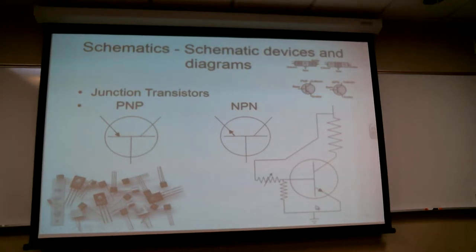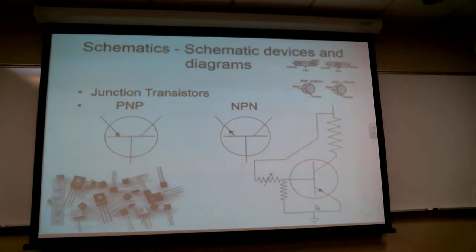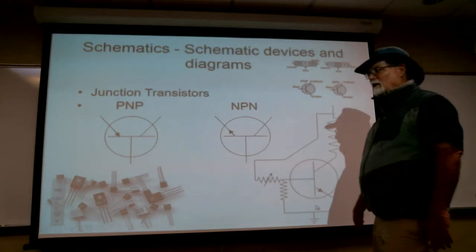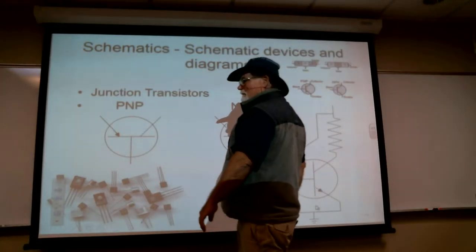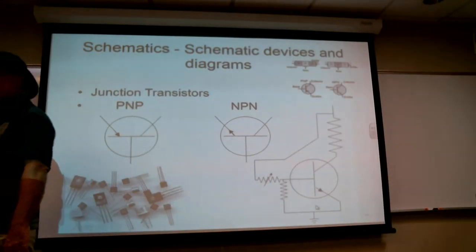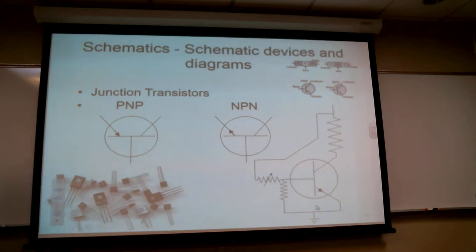Depending on how you polarize this thing, the depletion area will either get bigger in reverse bias or smaller in forward bias. In forward bias, they will eventually start conducting electrons at a fairly low voltage drop — maybe half a volt or 0.7 volt. In reverse bias, you're going to have to go quite a bit higher.